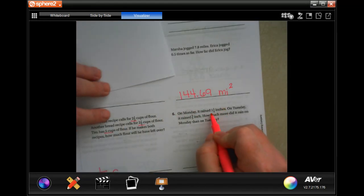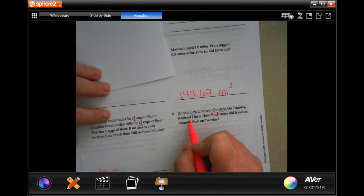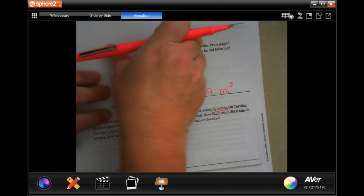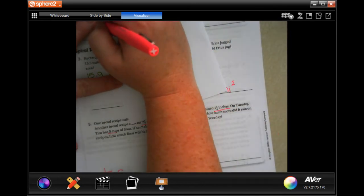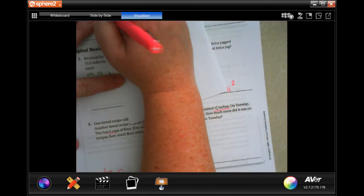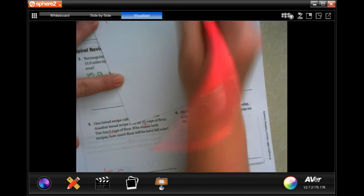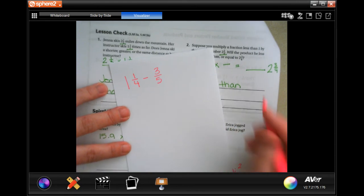On Monday, it rained one and a quarter inches. On Tuesday, it rained three-fifths of an inch. How much more did it rain on Monday than on Tuesday? So, we need to find the difference. We do that by subtracting one and one quarter minus three-fifths to find the difference.